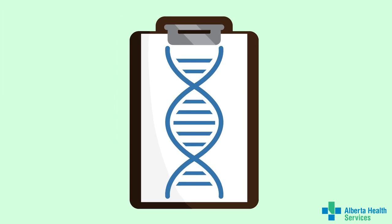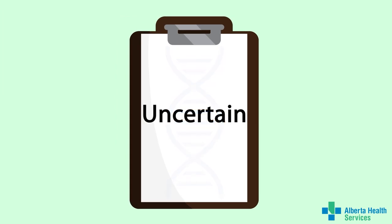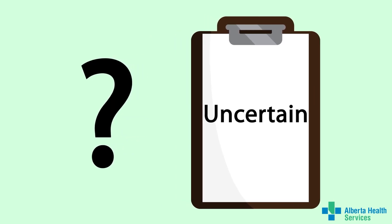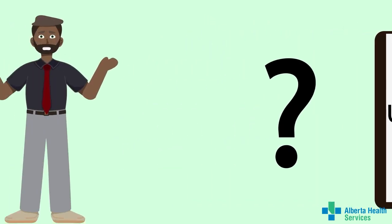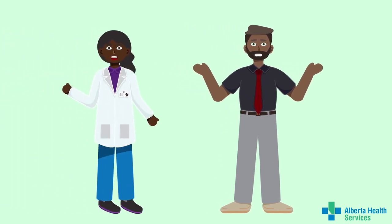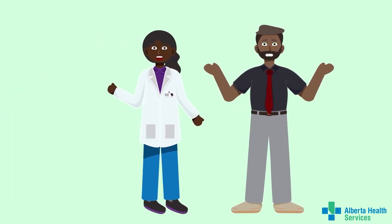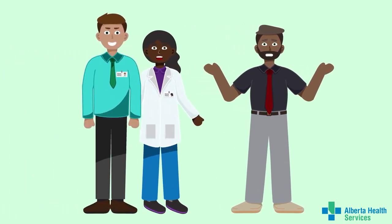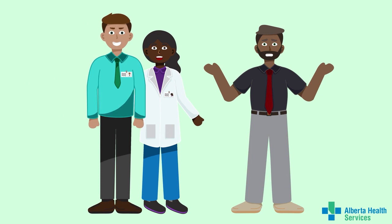The third possibility is an uncertain result. This means a genetic variant was found that is not well understood — it may or may not explain the health concerns. Your doctor or genetic counsellor will discuss with you possible next steps to try to better understand this result.